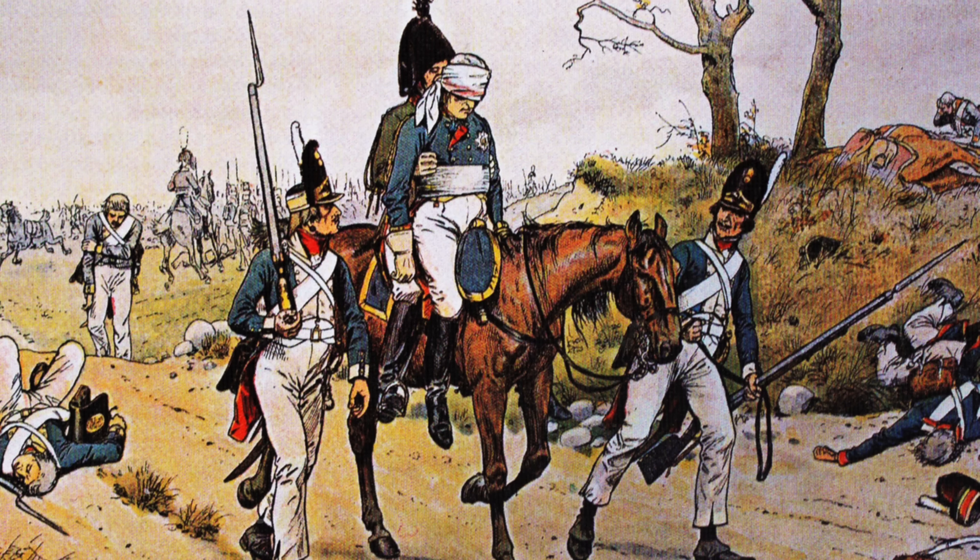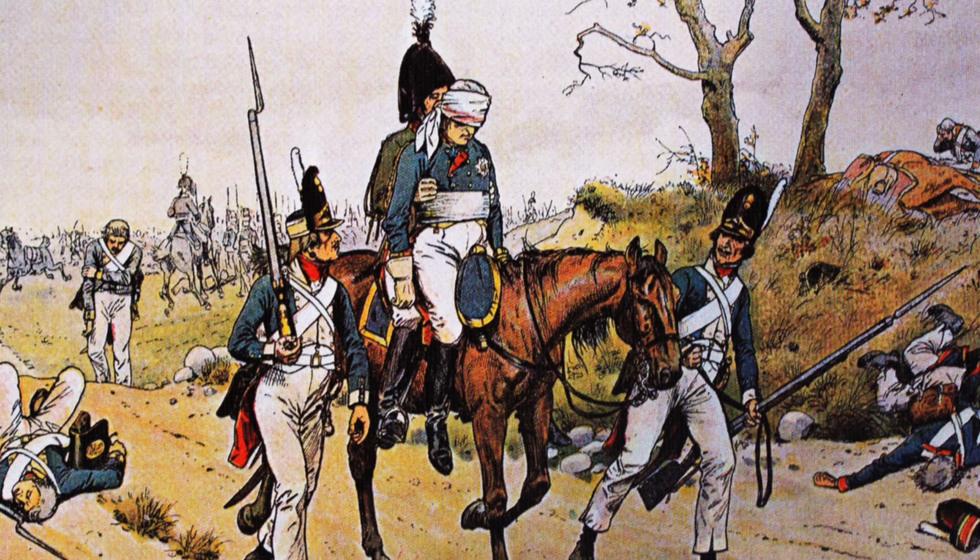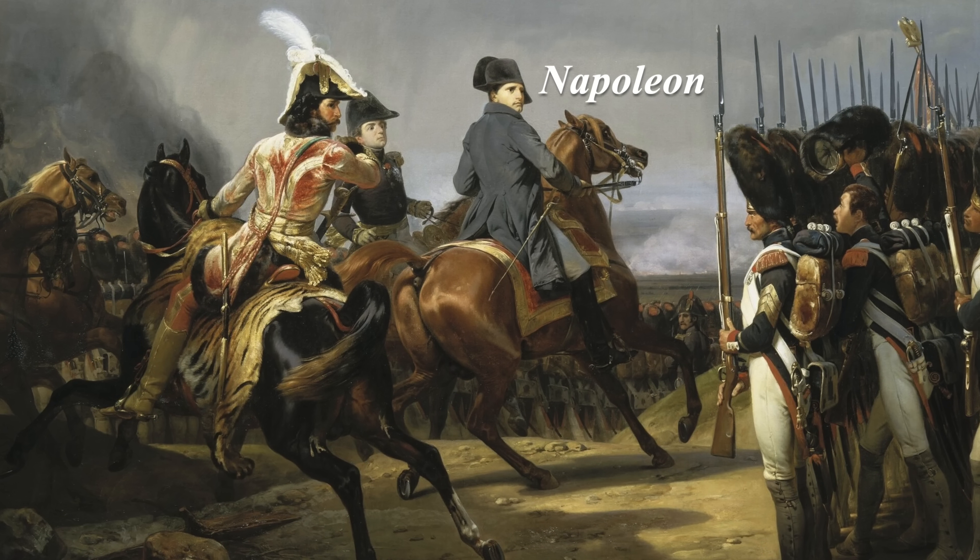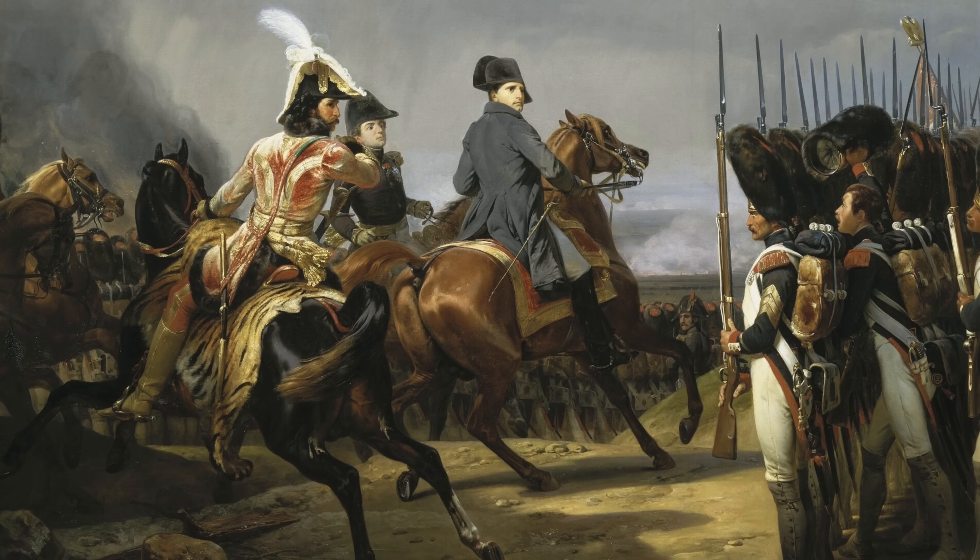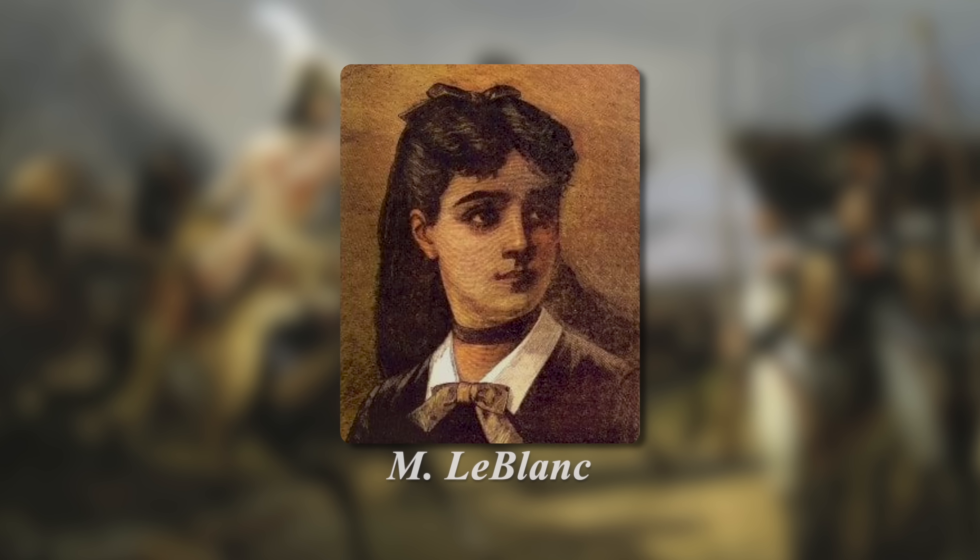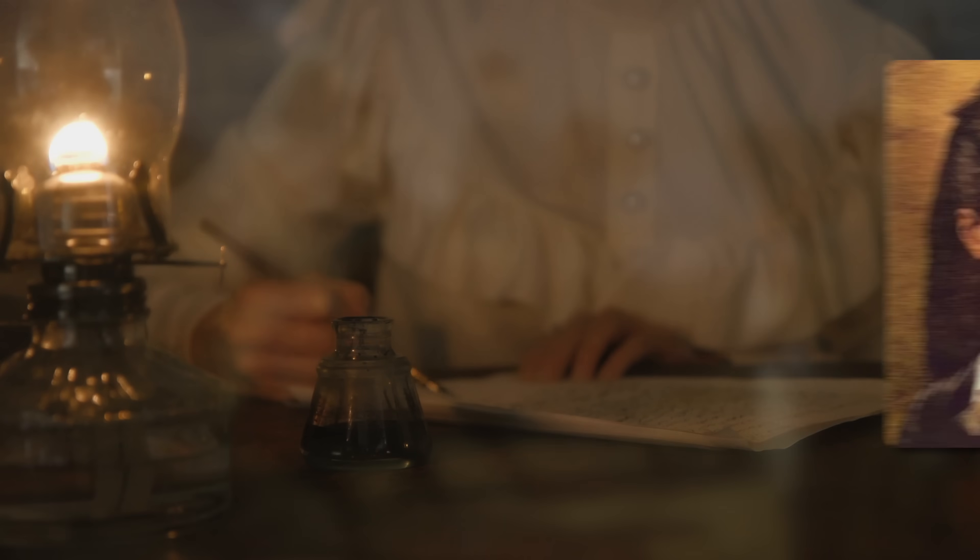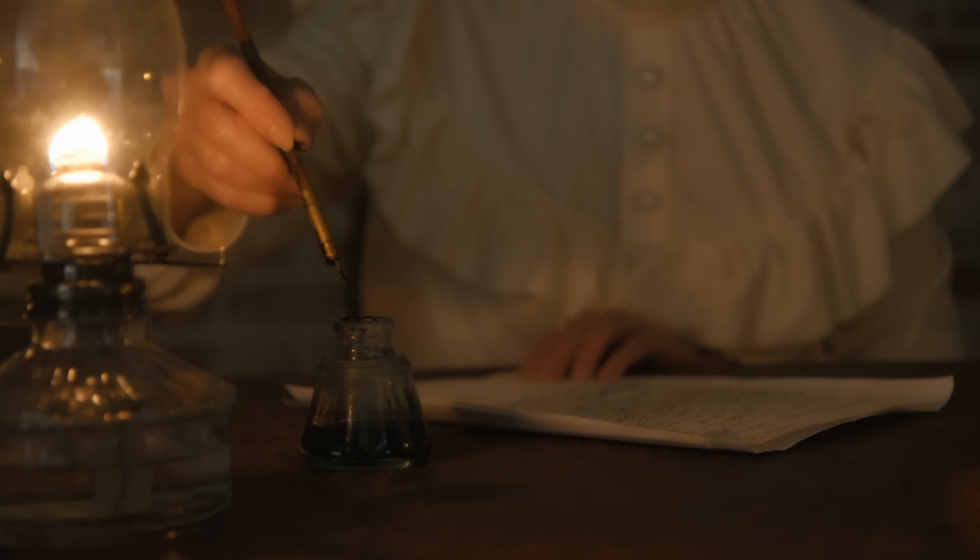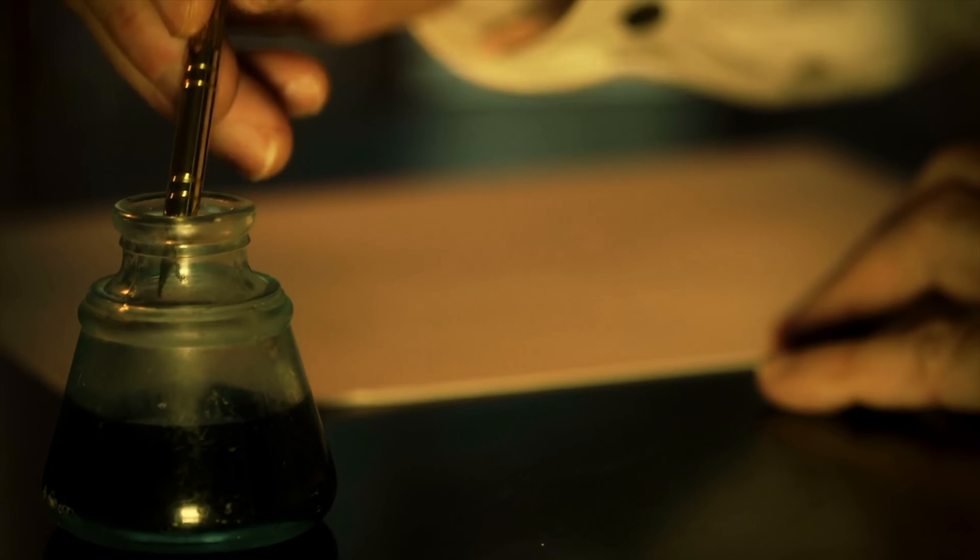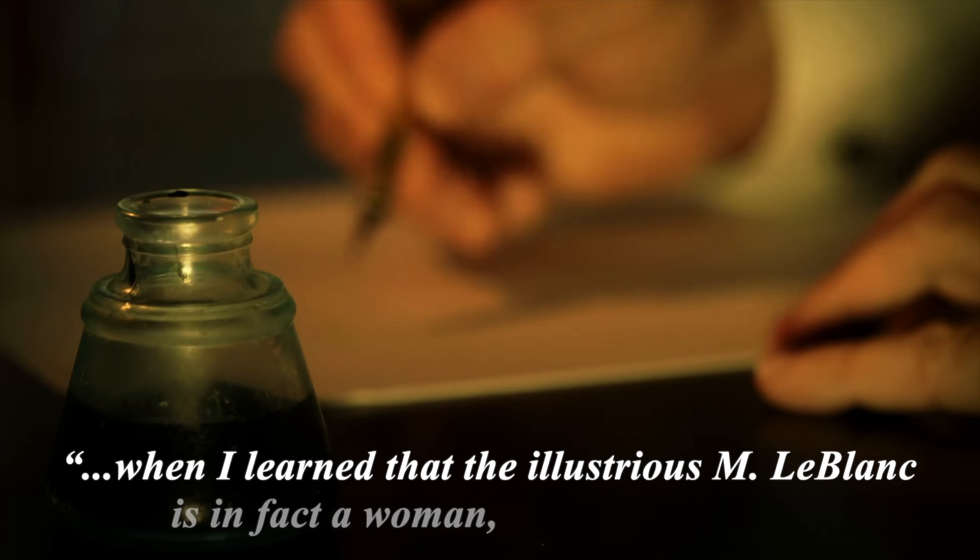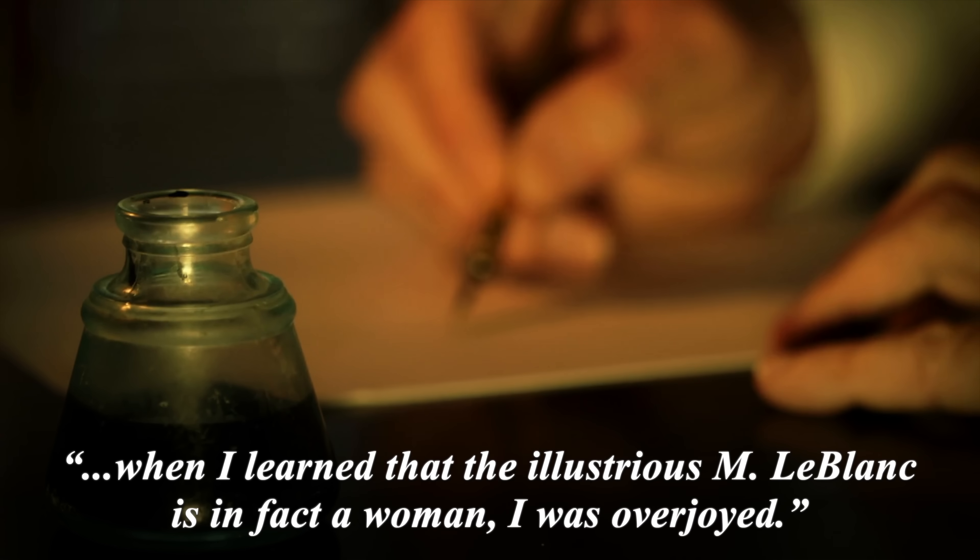Carl and Johanna lived happily until their lives were overturned when the duke was wounded in a battle against Napoleon's troops, and later died. When French troops occupied Brunswick, Napoleon instructed his generals not to harm Carl, on the advice of a French mathematician by the name of Monsieur Leblanc. Carl later learned that Monsieur Leblanc was actually Sophie Germain. Sophie had hidden her identity in her correspondence with Carl, fearing he wouldn't take a woman seriously. On the contrary, he expressed his delight to her. When I learned that the illustrious Monsieur Leblanc is in fact a woman, I was overjoyed.